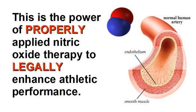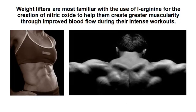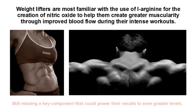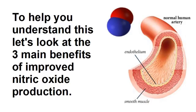Now let me highlight two key components: properly and legally. So let's look at the properly portion. Weightlifters are most familiar with the use of L-arginine for the creation of nitric oxide to help them create greater muscularity through improved blood flow during their intense workouts. And while this is helpful, it is still missing a key component that could power their results to even greater levels. Let's look at the three main benefits of improved nitric oxide production.